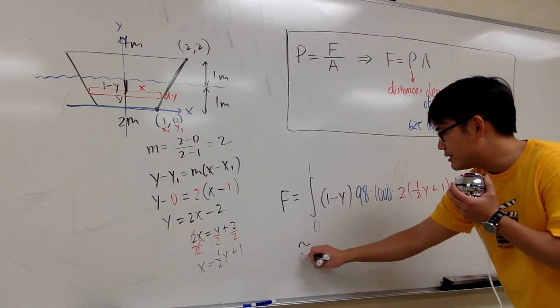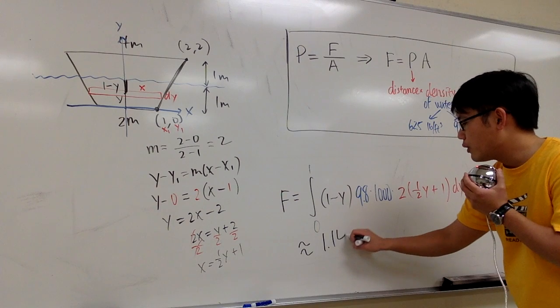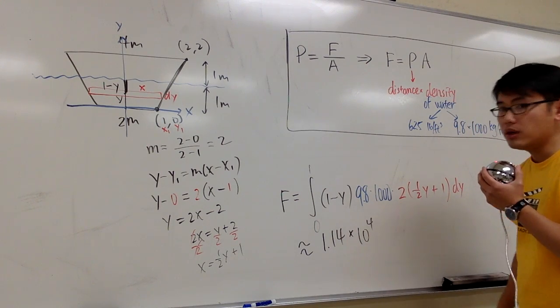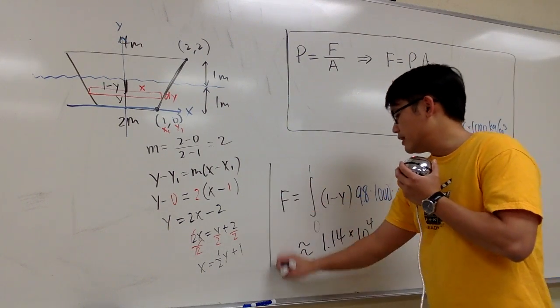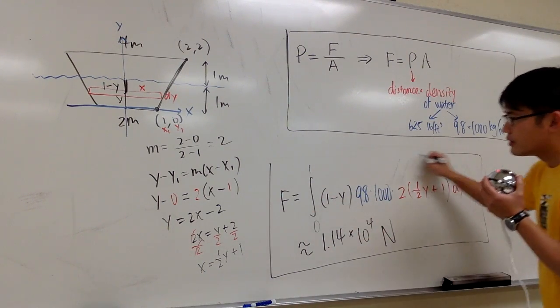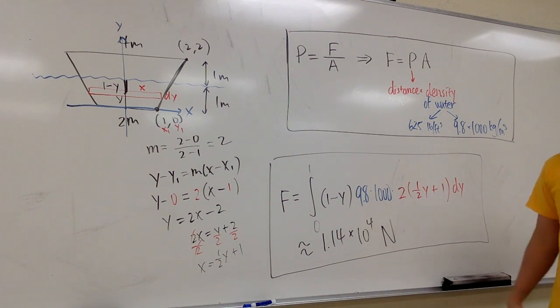And if you compute this, this is going to give us 1.14 times 10 to the fourth power. And the unit for this is Newton, because we are in the SI unit. So this right here will give us the answer. That's it.